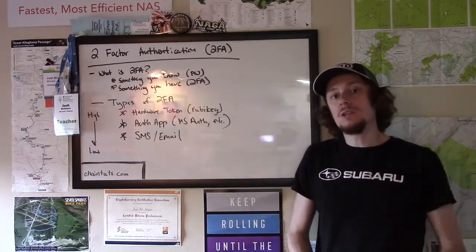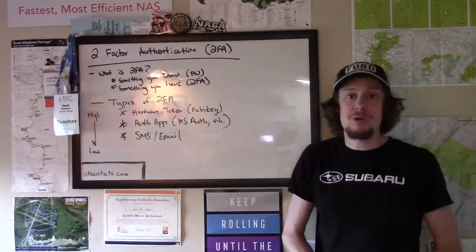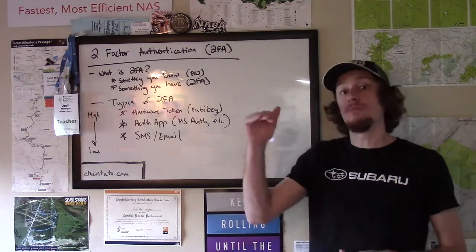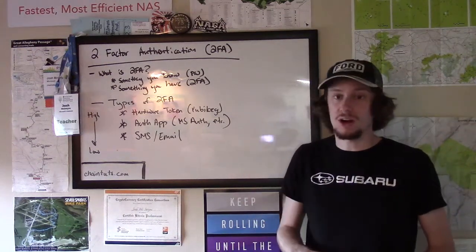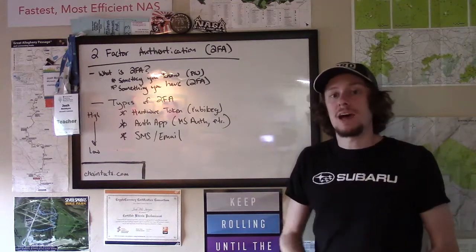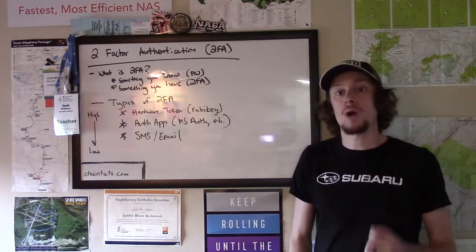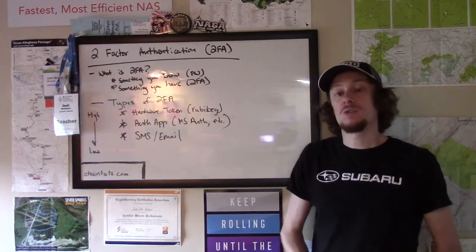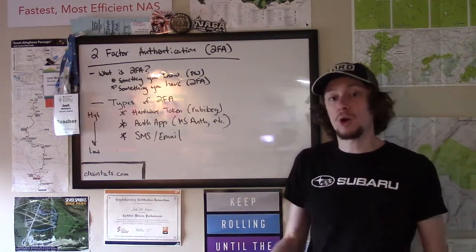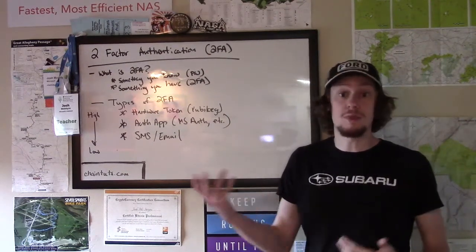Let's talk about what types of 2FA are out there, ranked from the most secure to the least secure. The first and best type of two-factor authentication is hardware-based 2FA — something like a YubiKey USB dongle or even a smart card, which you might be familiar with in the business world.